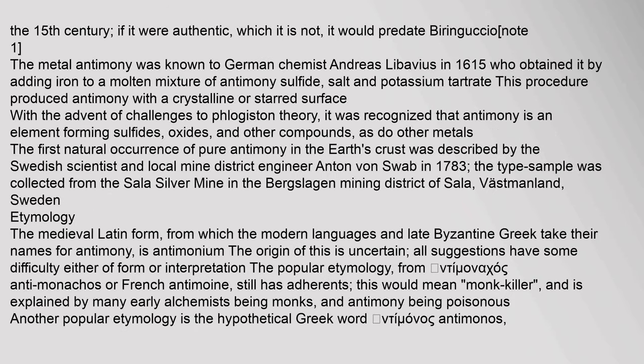In the 15th century, if it were authentic — which it is not — it would predate Biringuccio. Metallic antimony was known to German chemist Andreas Libavius in 1615, who obtained it by adding iron to a molten mixture of antimony sulfide, salt, and potassium tartrate, producing antimony with a crystalline or starred surface. With the advent of challenges to phlogiston theory, it was recognized that antimony is an element forming sulfides, oxides, and other compounds. The first natural occurrence of pure antimony in the Earth's crust was described by Swedish scientist Anton von Swab in 1783; the type sample was collected from the Sala silver mine in Västmanland, Sweden.